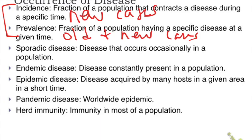For example, the incidence of malaria this month of July in Agusan del Norte is 15 new cases. But the prevalence of malaria from January to July is 805 — that figure includes all old and new cases combined.